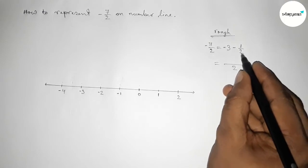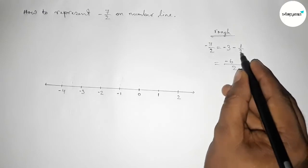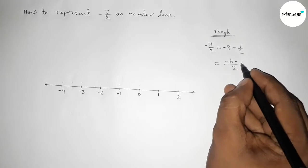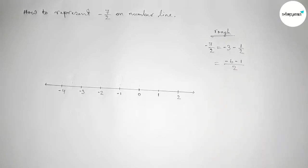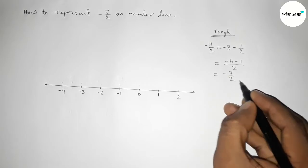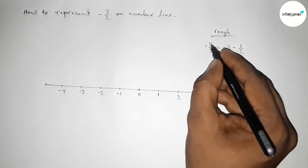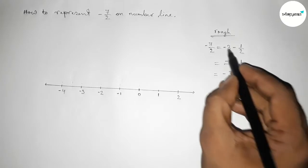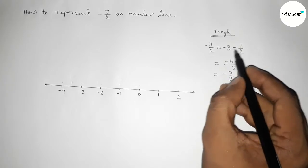So here LCM will be 2, and 2 times 3 is 0 minus 6, and here minus 1. Now simplifying this, so this is minus 7 by 2. So this and this equal, so we can write this as minus 3 and minus 1 by 2.